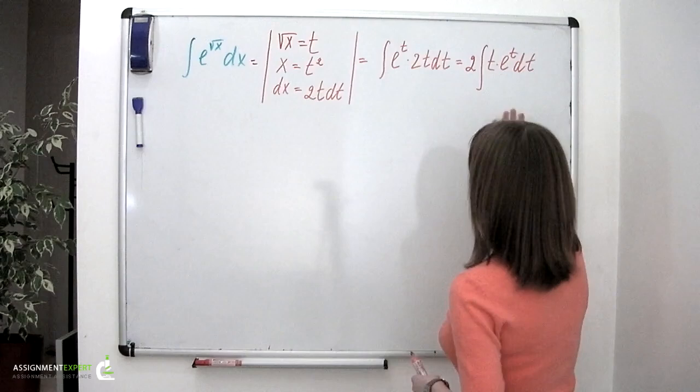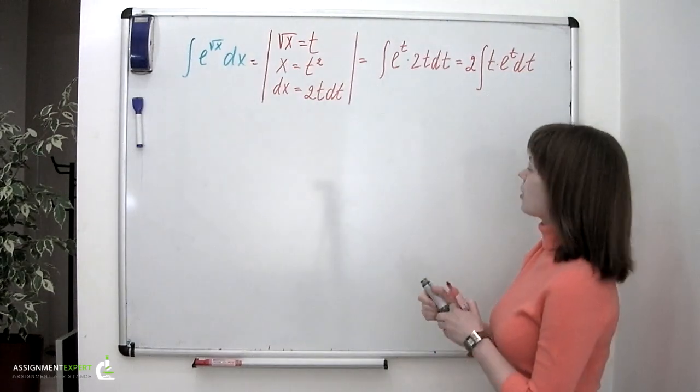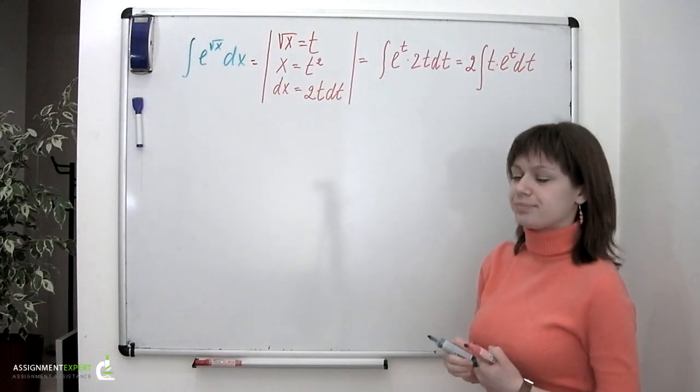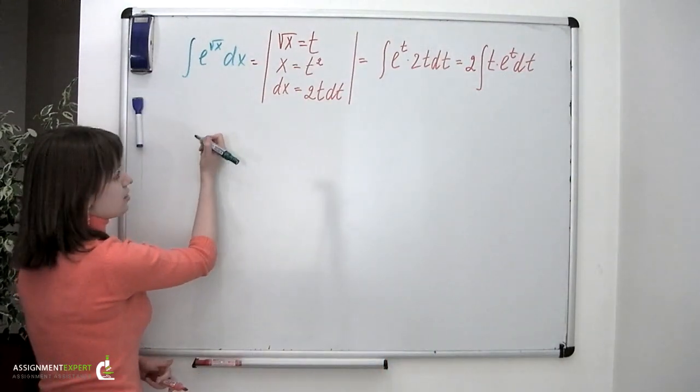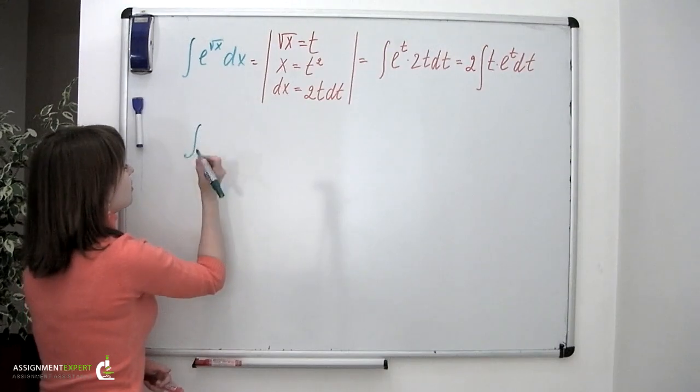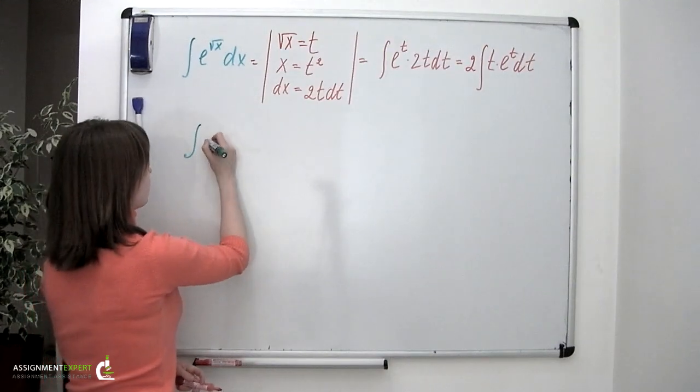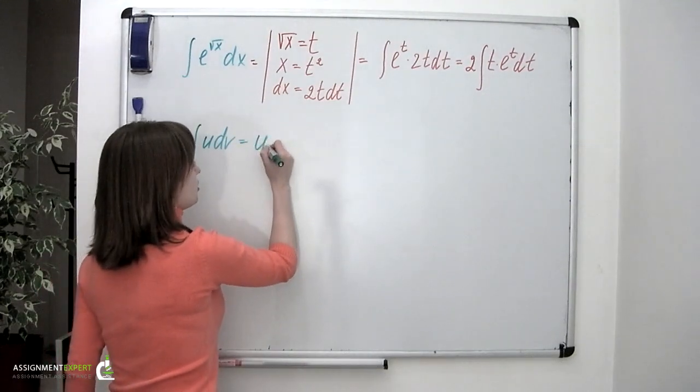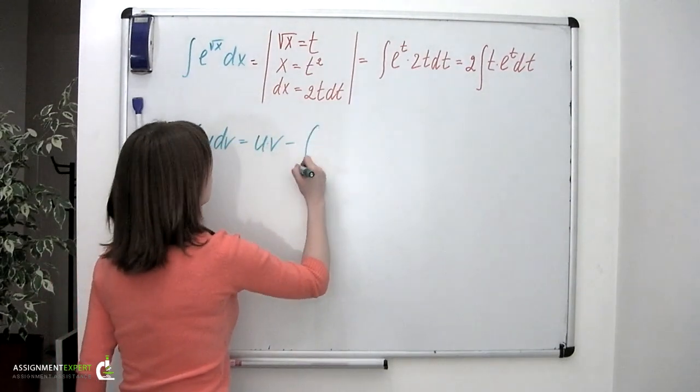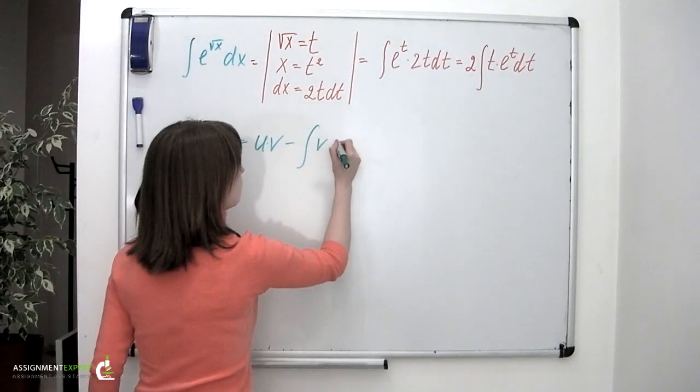This is the integral which is taken by parts. The general formula for integration by parts is the integral of u dv equals u times v minus the integral of v du.